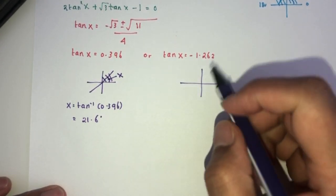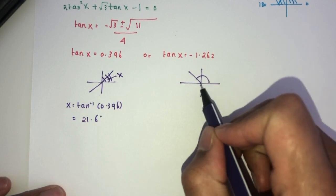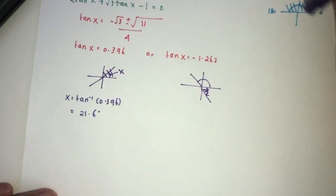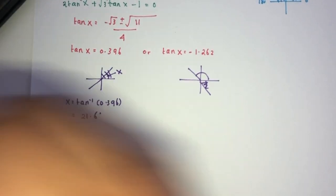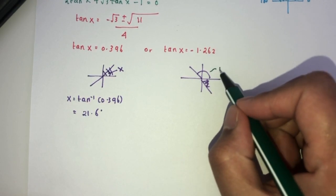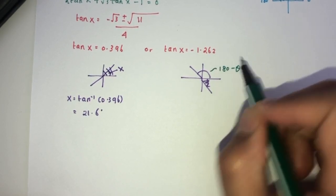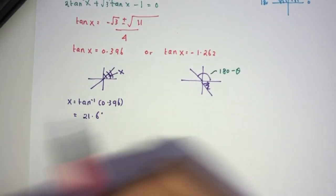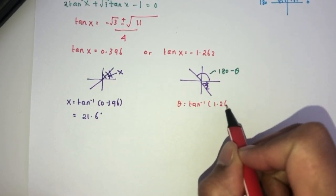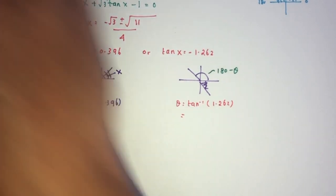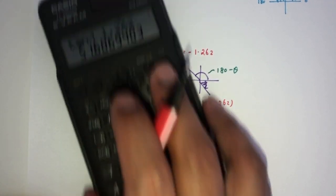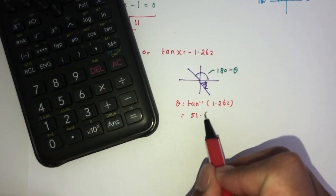Now for this one it is negative. ASTC, so if tan is negative it should be here and here, but here we don't care because it only has to be the top values. Now because it is negative we cannot find it directly, but we will use the value of theta, which is 180 minus the angle that we need to first find. Theta is simple, it is tan inverse of the positive value of this one. Tan inverse of 1.262, that will be 51.6 degrees.